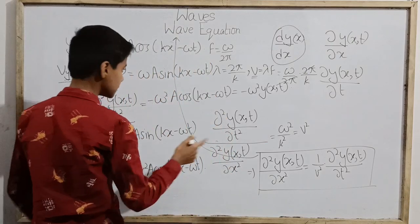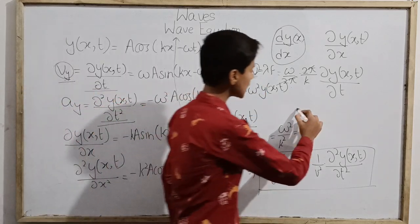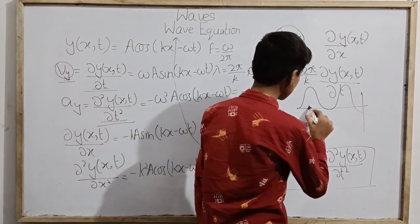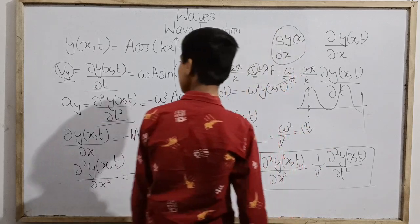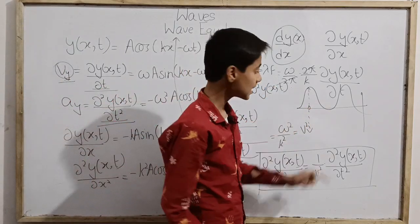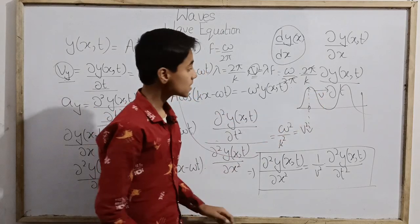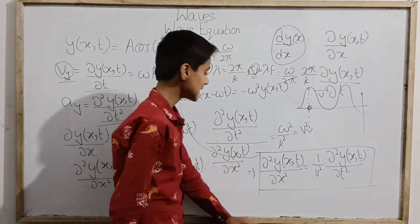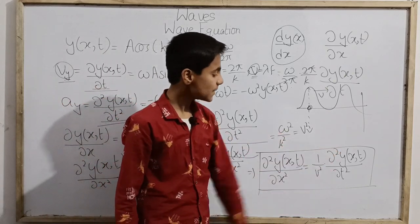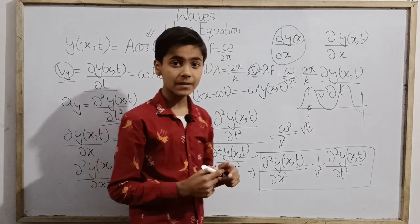Remember, vy is not the same as v. If we assume a transverse wave passing through the medium, the particles undergo simple harmonic motion. The speed vy at which a particle moves up and down describes the motion of the particle, not the wave. The wave speed v = ω/k is the speed at which the wave propagates — also called phase velocity. So the second-order partial derivative of the wave function with respect to x equals one over the wave speed squared times the second-order partial derivative of the wave function with respect to time.